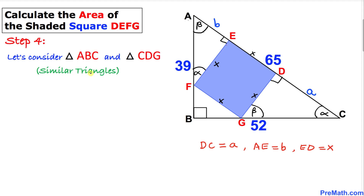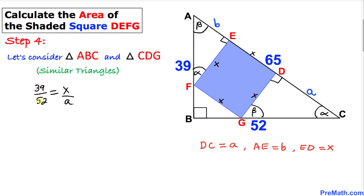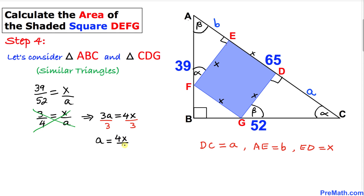Let's look at triangles ABC and CDG. Since they are similar, we can write the proportion: 39 over 52 equals X divided by A. Reducing 39/52 gives 3 over 4 equals X over A. Cross-multiplying gives 3A equals 4X. Dividing both sides by 3, we get A equals 4X over 3.